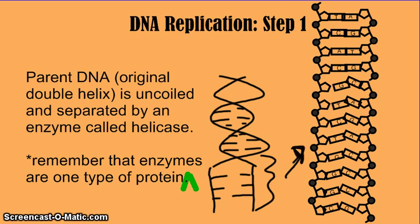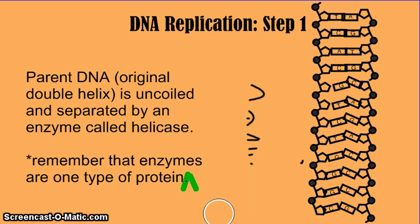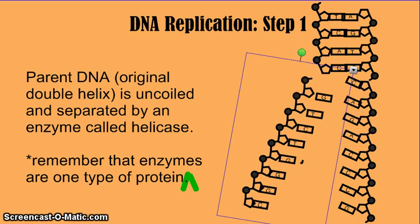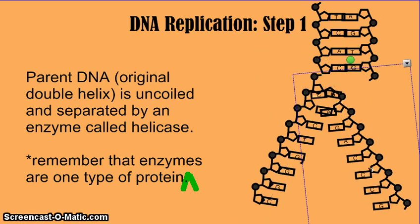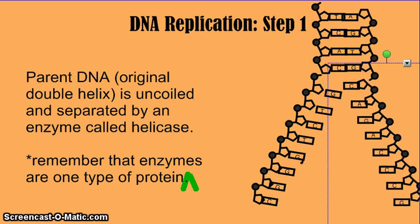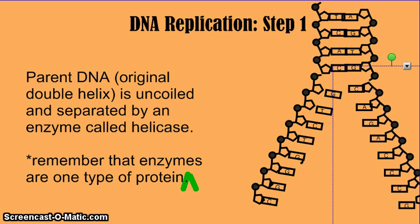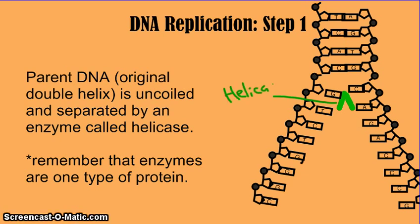The thing that separates and flattens the DNA and uncoils it is an enzyme called helicase. Enzymes are one kind of protein, and this is an enzyme protein involved in the separation. So the DNA strand gets unzipped, or uncoiled, and flattened out, separated by an enzyme called helicase. I've drawn it here — this is the helicase enzyme. I've drawn it sort of like a V-shaped structure, kind of like a wedge pushing the DNA open. In real life, the protein does sort of look wedge-shaped, although it's not really a green triangle.